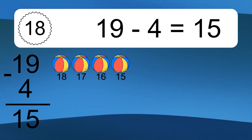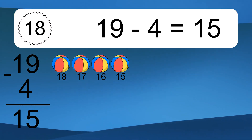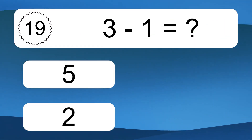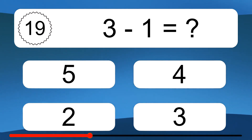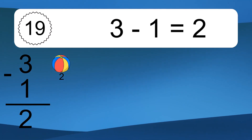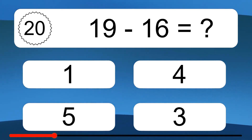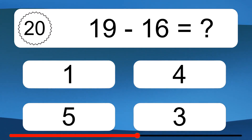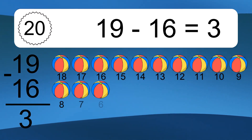19 minus 4 equals 15. Let's count it: 18, 17, 16, 15. 19 minus 16 equals what? 19 minus 16 equals 3. Let's count it: 18,